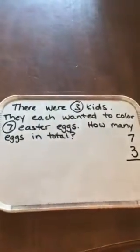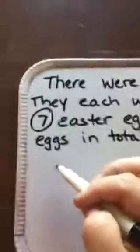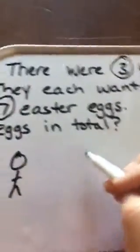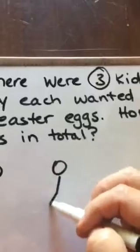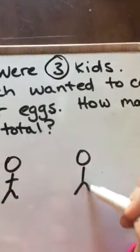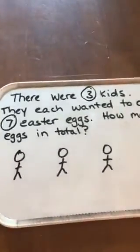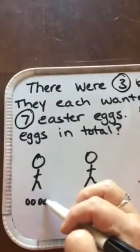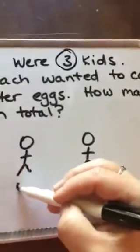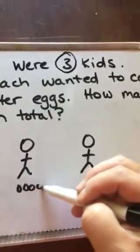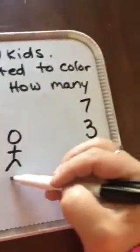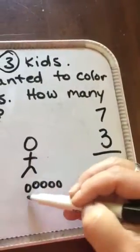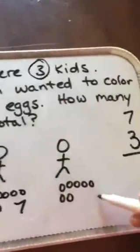So the first thing I'm going to do is draw this out. There were three kids — one, two, three. And they each want to color seven eggs, so I'm drawing seven eggs for each of the three kids. So we got seven eggs for each kid.